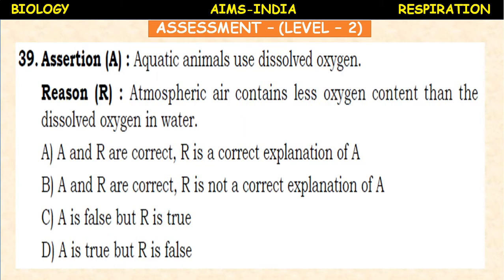Assertion-Reasoning type question: Assertion — aquatic animals use dissolved oxygen during respiration. Reason — atmospheric air contains less oxygen content than the dissolved oxygen in water. In this assertion-reasoning type, you have to check first whether the assertion and reason statements are true or not, then check the options. If both are true, check whether the reason supports the assertion or not.